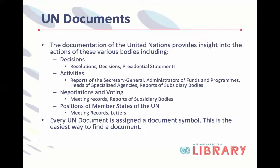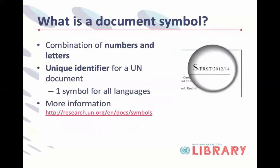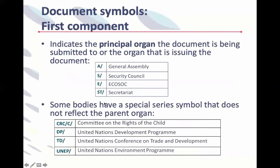One of the most essential things to know about UN documents is that every UN document is assigned a document symbol — this is the easiest way to find a document. At the reference desk we often ask: do you have a document symbol? Because if you do, it's fairly easy to find. A document symbol is a combination of numbers and letters; it's a unique identifier for a UN document, and it's the same symbol across all six official languages. There's a link in our research guides with more information about document symbols.